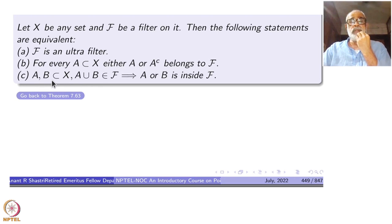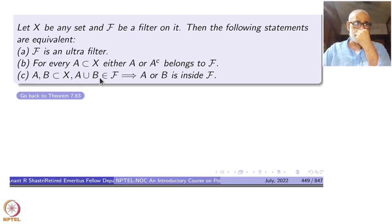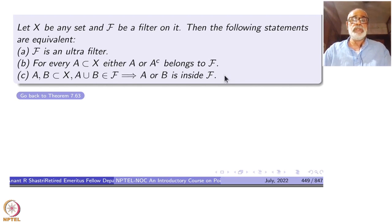The third statement C is a useful one: if A and B are subsets of X and their union is in F, then A or B is in F. Remember, by the definition of a filter, if A is in F or B is in F then the union will already be there. But now some superset is in F which can be written as the union of two subsets — then one of those subsets must itself be inside F. This is the condition for an ultrafilter.